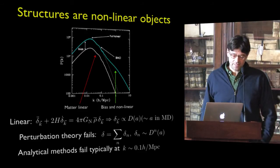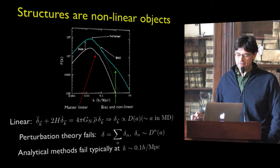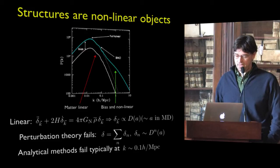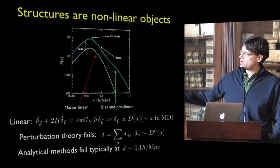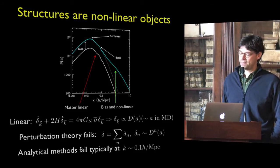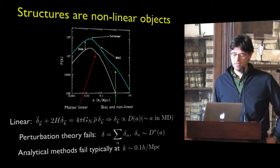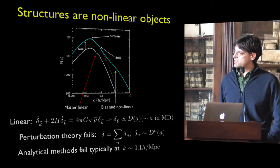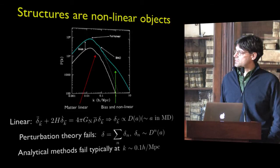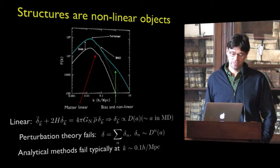It is fair to say that perturbation theory naively applied does not work, because you expand the density contrast as a sum of contributions at first order, second order, and so on. The second order grows like the square of the scale factor, and therefore you again hit the non-perturbative regime very quickly.